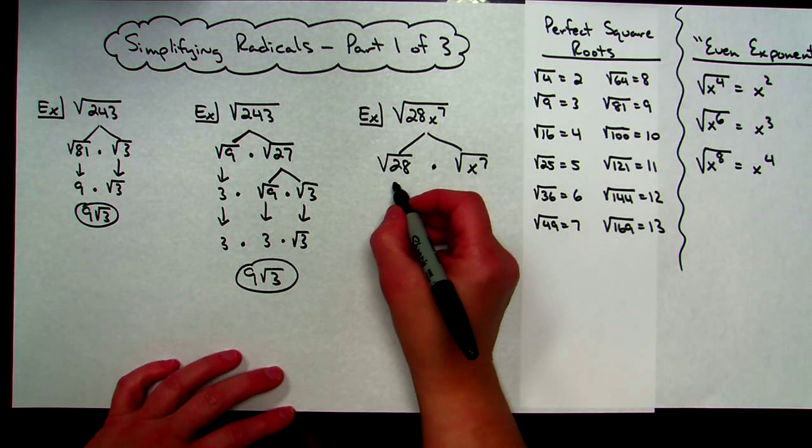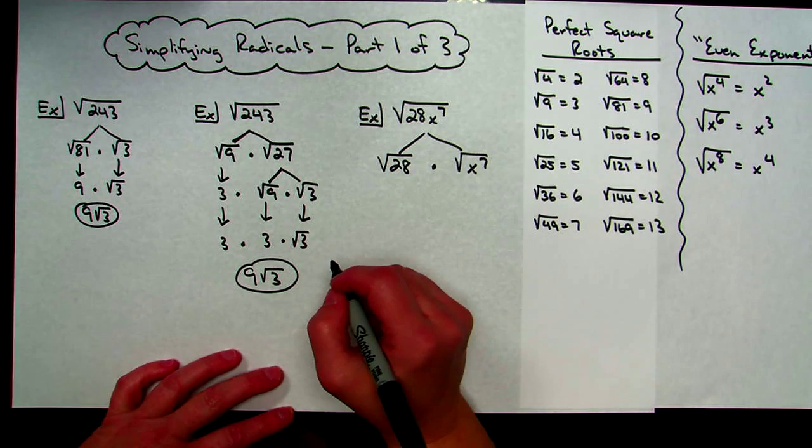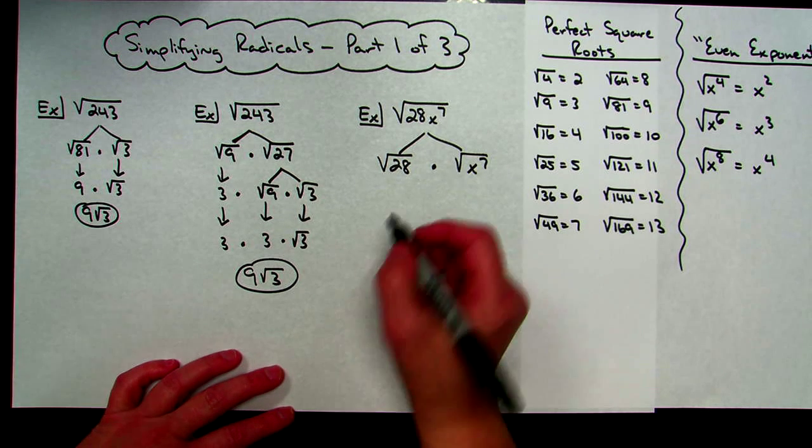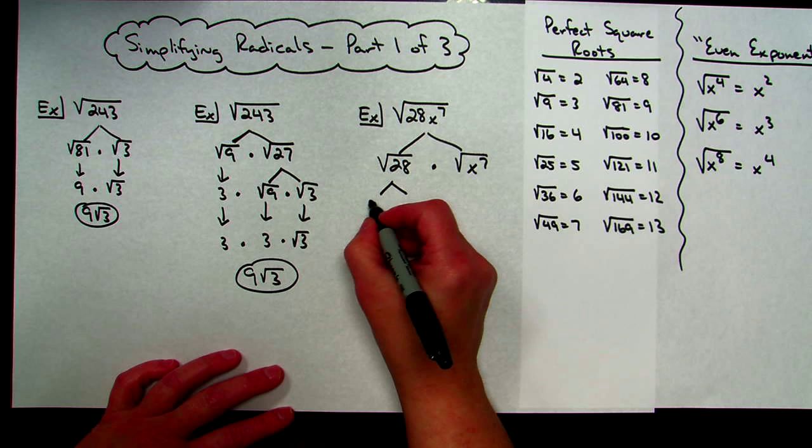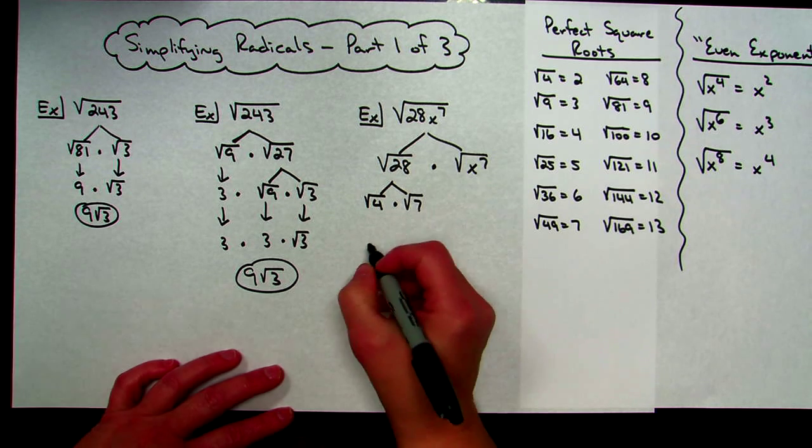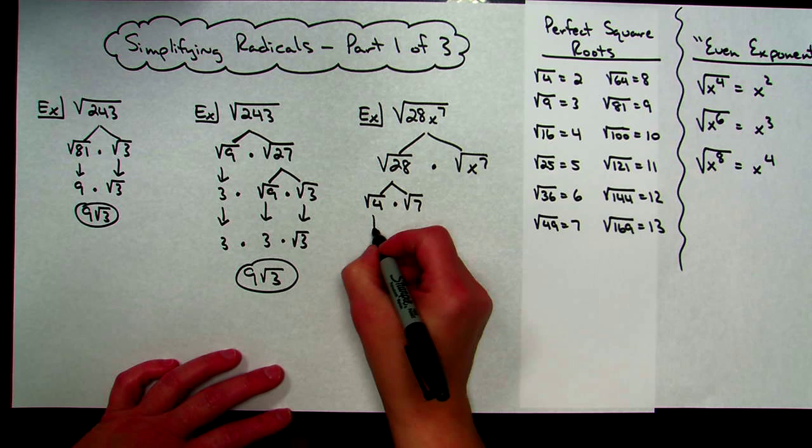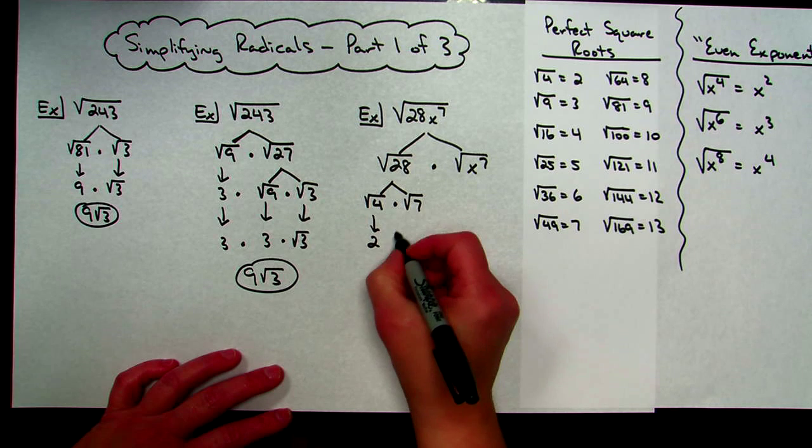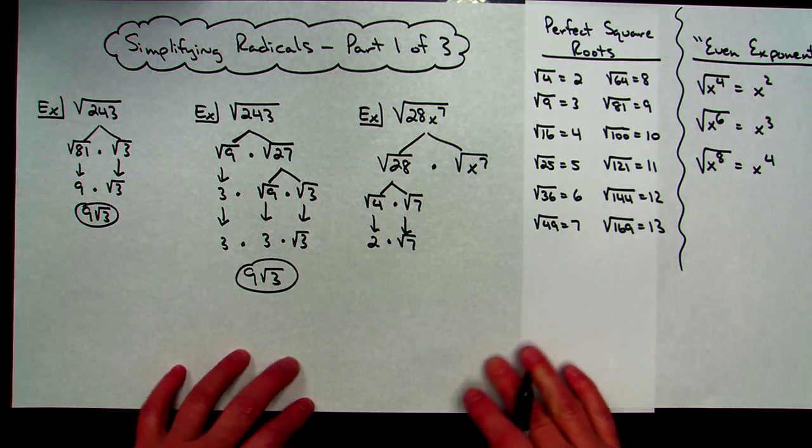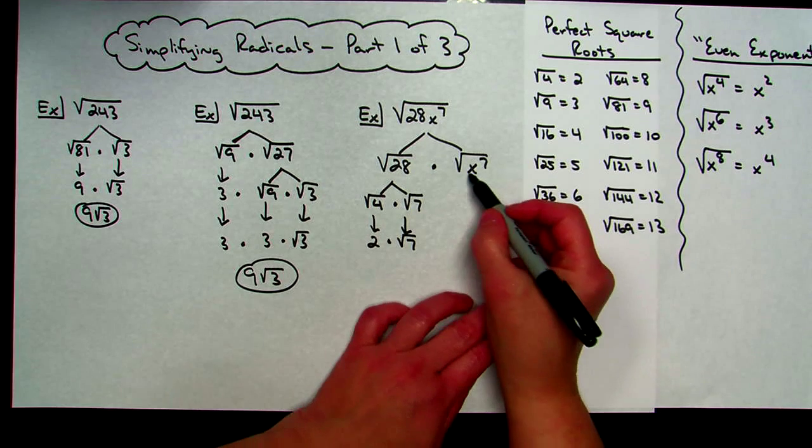So square root of 28, I'm going to look over here on my list. I'm going to find the biggest perfect square root that will go into it. I'm pretty sure it's 4 because 4 times 7 is 28. So square root of 4 times square root of 7. Square root of 4 is a 2, and square root of 7 then is simplified as far as I can go. So I've taken care of the coefficient there.